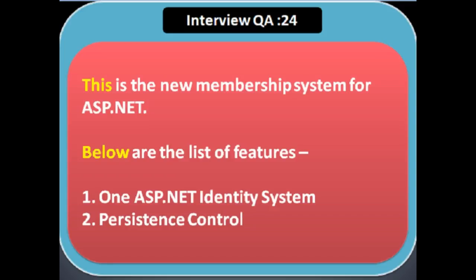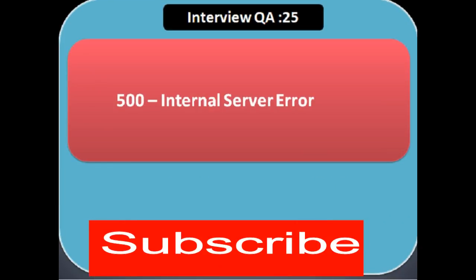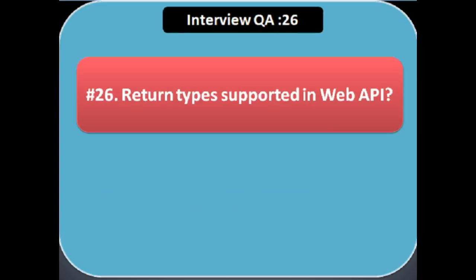The features supported by ASP.NET Identity in Web API are: one, ASP.NET Identity system, and two, persistence control. Next question: for all uncaught exceptions, Web API sends an HTTP response with which status code? The answer is 500 Internal Server Error.